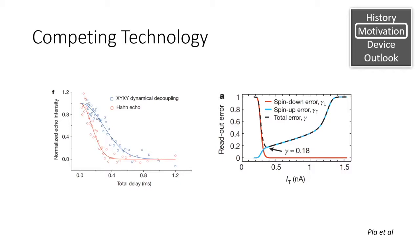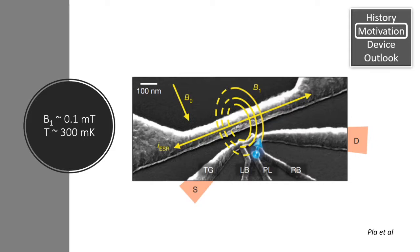This semiconductor qubit system was designed by Pla et al. in 2012, and it's been able to achieve coherence times of up to hundreds of microseconds with Hahn Echo and dynamic decoupling, and it's been able to achieve error rates of less than 20%.